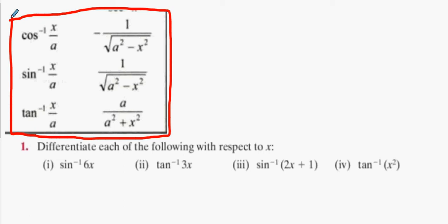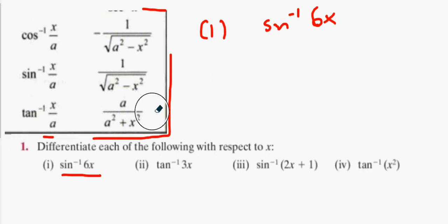Now, first question we have is sin inverse 6x. Now, the thing about your tables is there's a missing part. Your tables doesn't give you the full story. And you're more than welcome to write this in now if you want. Just write down ddx bracket behind each one. I'll explain what that means. So there's a missing part that makes it not able to work.